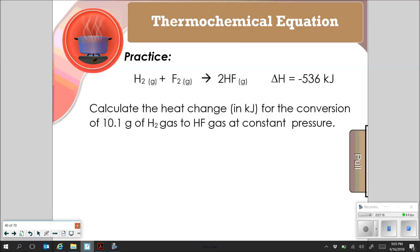Let's look at the stoichiometry problem with our thermochemical equation. If you note here at the top, my enthalpy or my change in heat is actually taken out of my equation and listed on the right. Note that it is negative. So overall, this is an exothermic reaction. It is losing energy. Let's calculate the heat change in kilojoules for this conversion of 10.1 grams of hydrogen gas to hydrofluoric acid gas at a constant pressure.